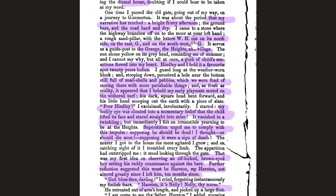The three main locations — Wuthering Heights, Thrushcross Grange, and Gimmerton — are highlighted here. We normally only hear about Gimmerton in a few spots, like near the church and churchyard, but most of the novel is set across those two main locations and the moors. There's a signpost locating everything.